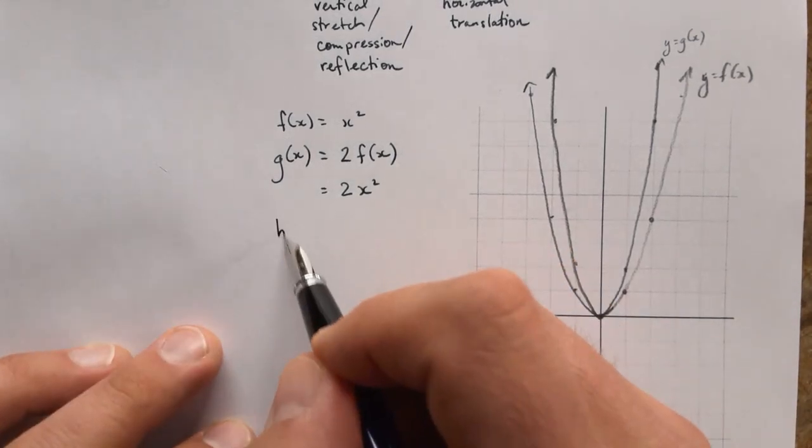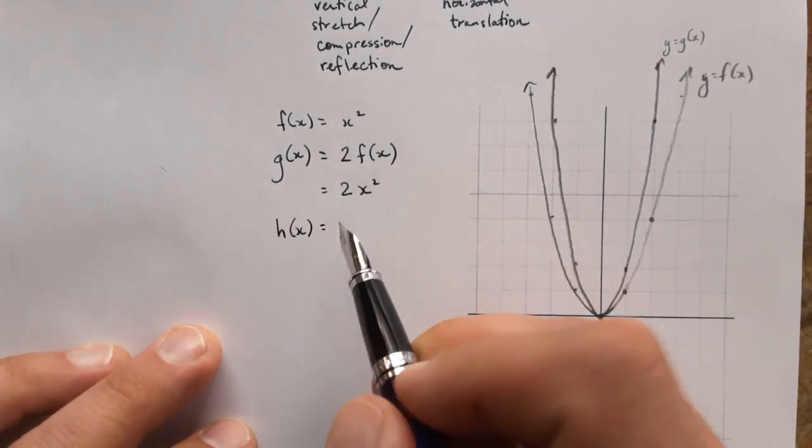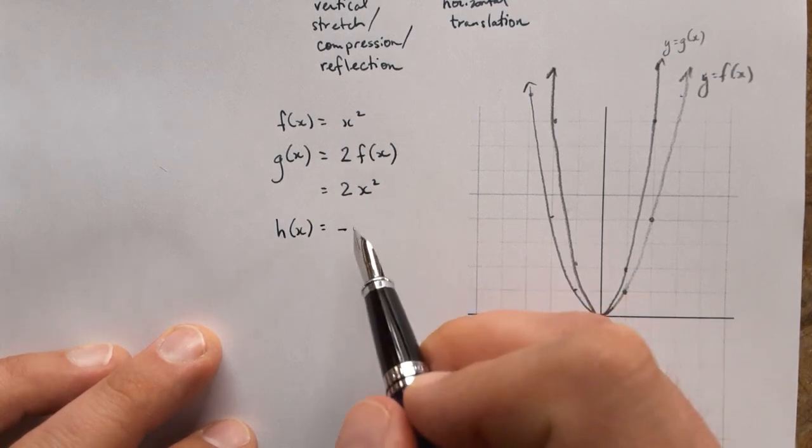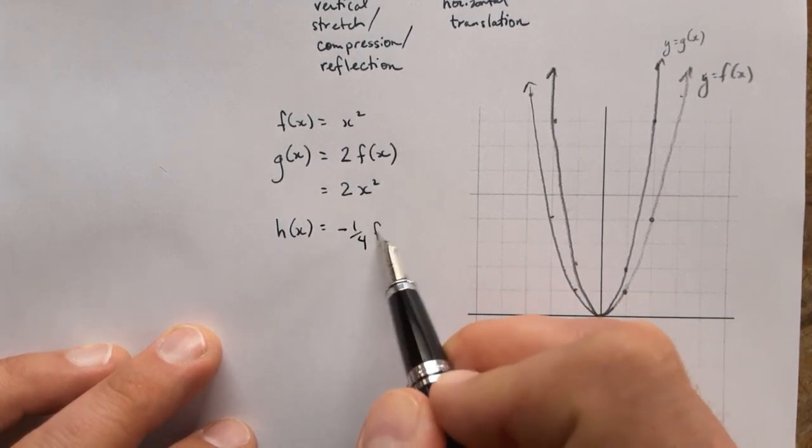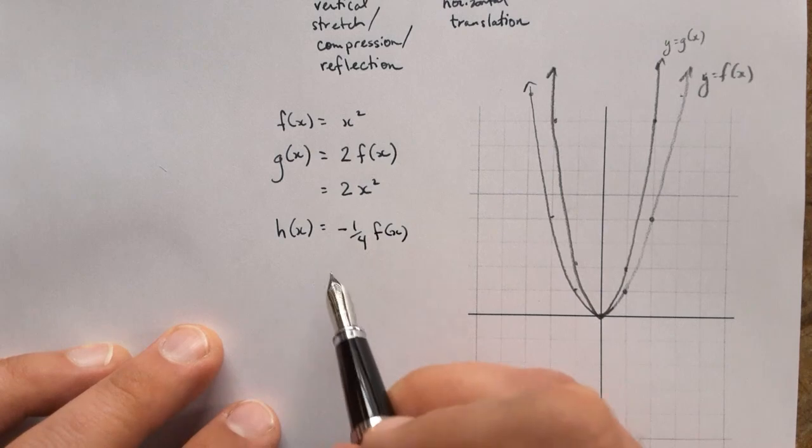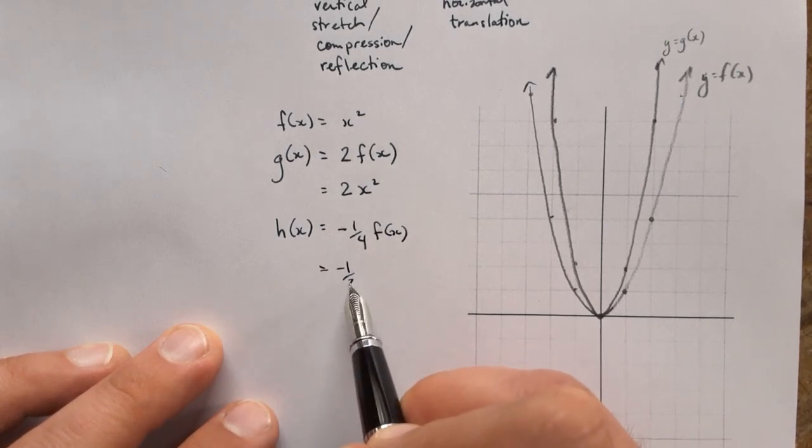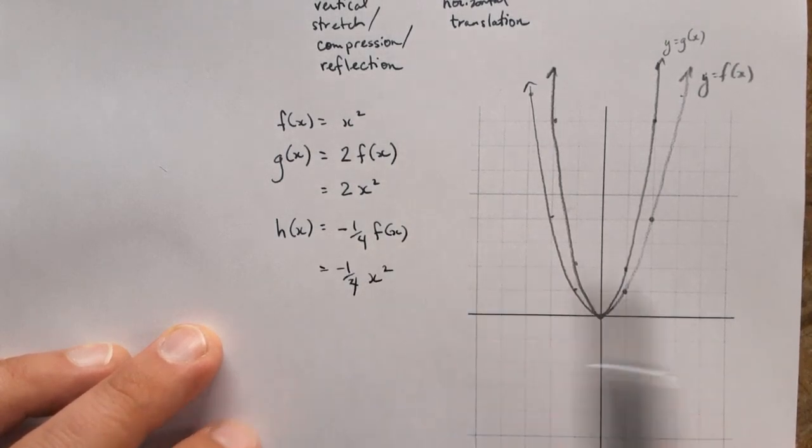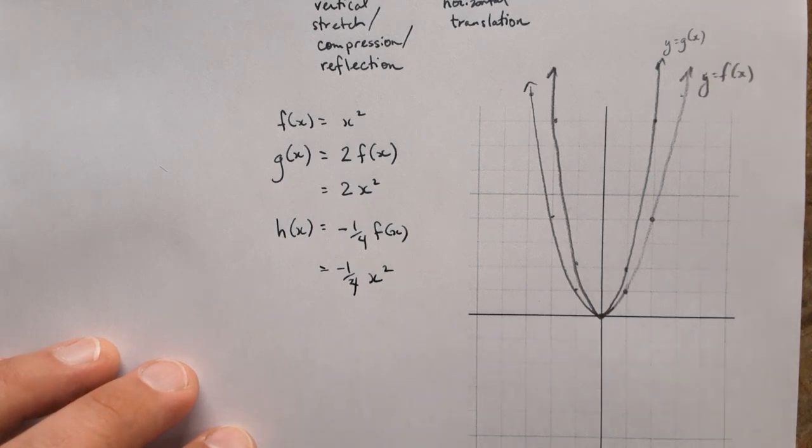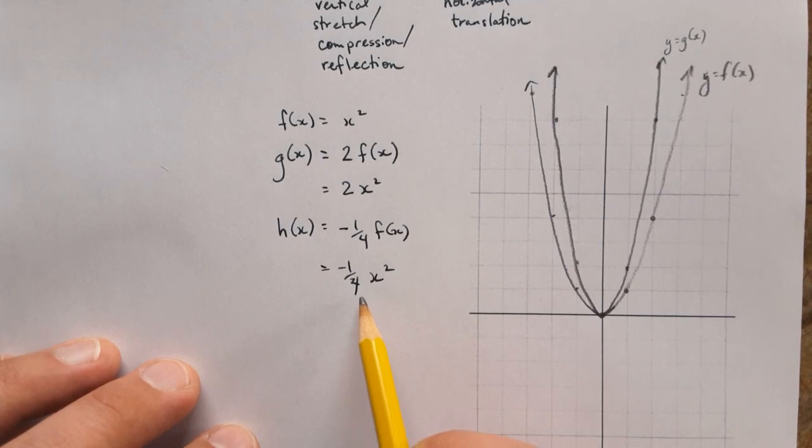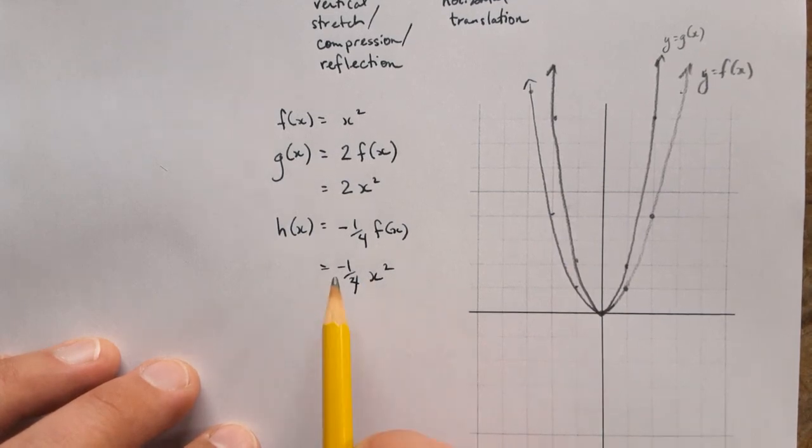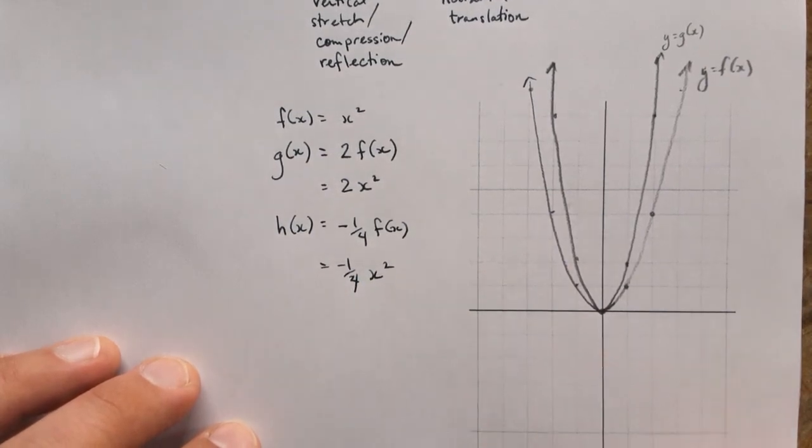Let's do one more. How about negative one quarter of f of x? Or we could write that as negative one quarter of x squared. So this one's going to be a little bit different because it has two things happening. It does have a vertical compression because that number is one quarter. And it's a reflection because that's a negative number.